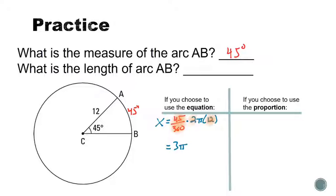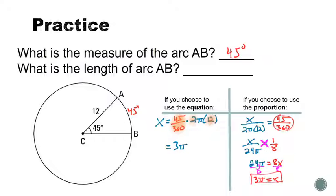If you want to use the proportion, the proportion we learned in the last slide is that the arc length over the entire circumference, which would be 2 times pi times 12, is going to be equal to some angle over 360. Let me simplify a little bit first. I'd have x over 24 pi equals 45 over 360, which simplifies to 1/8, so that can make our math a little easier. But then what I'm going to do is cross multiply. 24 times pi is 24 pi. 8 times x is 8x. And then after you divide by 8 on each side you get that x equals 3 pi. So you can get the same answer using the proportion that you would use using the equation.